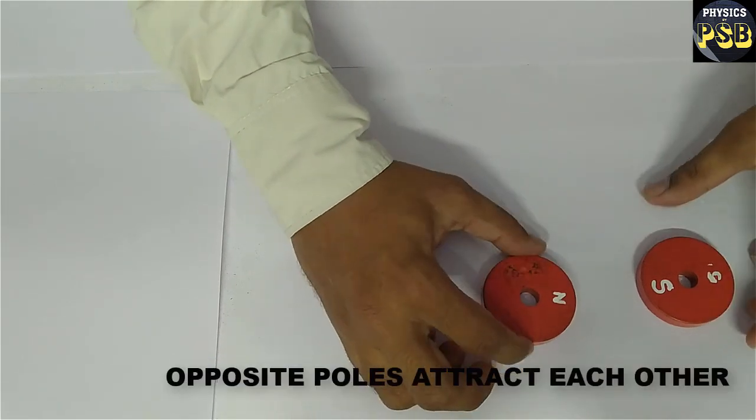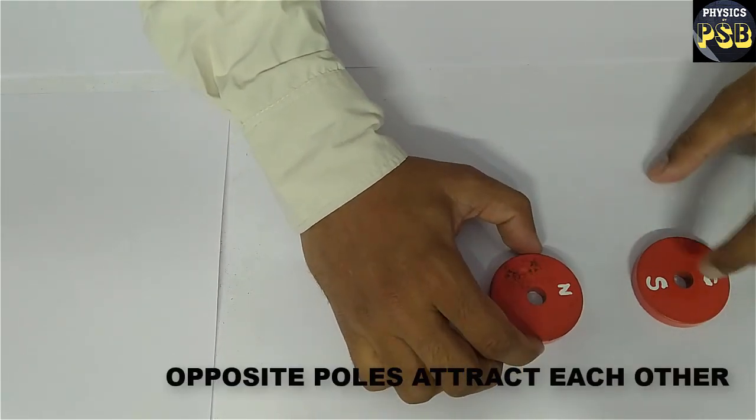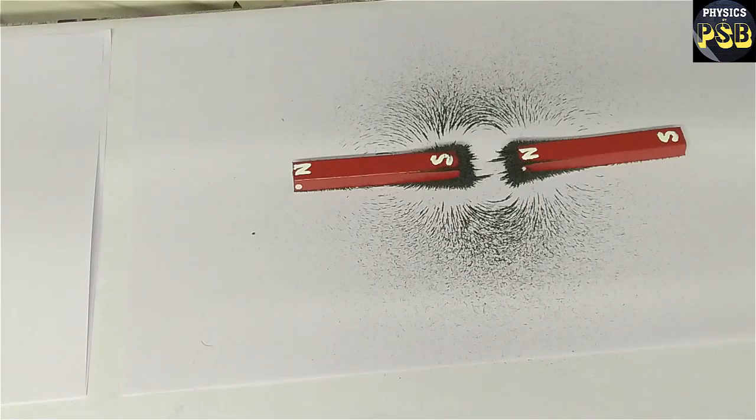Whereas, when we bring north pole of one magnet to the south pole of another magnet, they attract. It is observed in case of magnetic field as well.